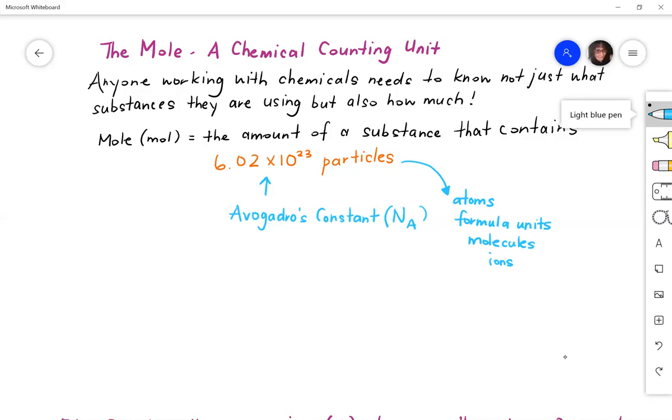certain questions will tell you that you have a certain amount of atoms or a certain amount of formula units and you might be working backwards or forwards to figure out the number of moles of that substance or the amount of mass of that substance and how that also corresponds to the Avogadro's constant.